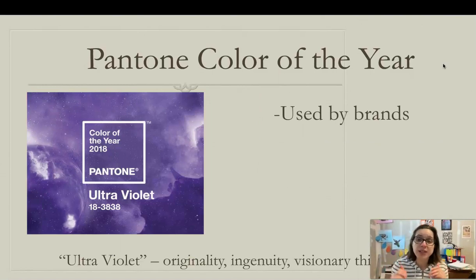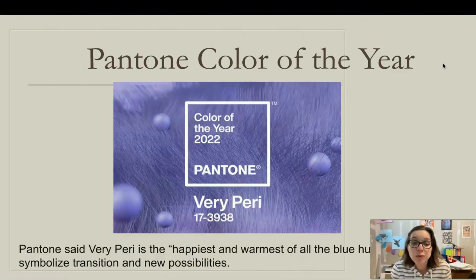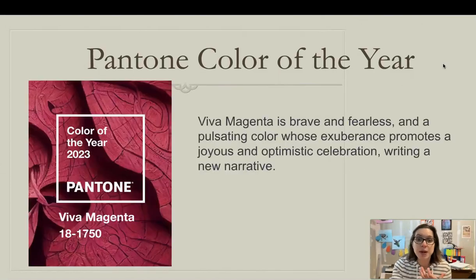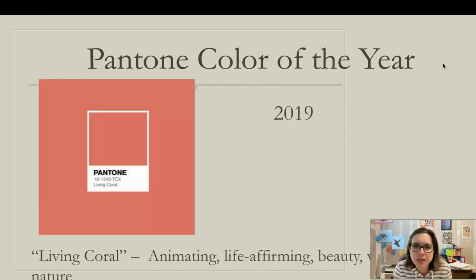For example, in 2018, Ultraviolet was chosen because of originality and visionary thinking — and you can see products being sold using that color. During 2022, Very Peri was called the happiest and warmest of all the blue hues, meant to symbolize transition and new possibilities — fitting, since 2022 was a couple of years after the COVID pandemic of 2020. Viva Magenta for 2023 is described as brave and fearless, promoting joyous and optimistic celebration. It's interesting how marketing and brands really look at color for the direction they want to go.